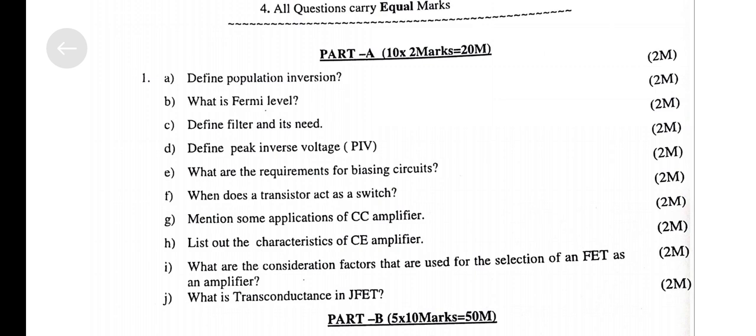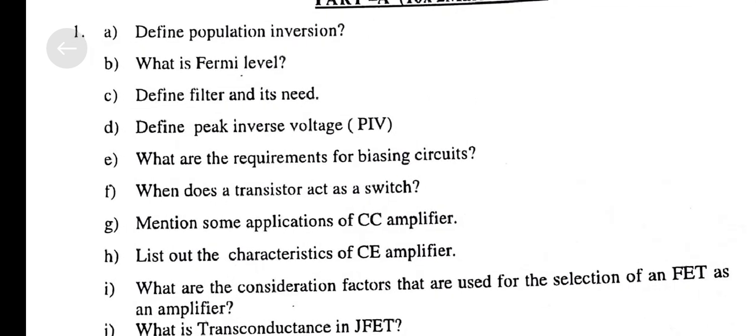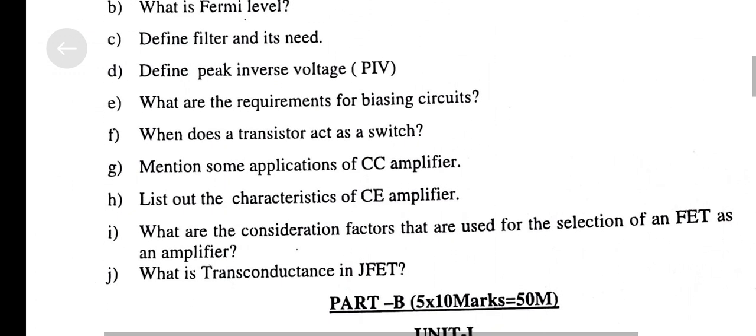Part A. A. What is the Fermi Level? C. Define Filter and its Need. D. Define Peak Inverse Voltage. E. What are the Requirements for Biasing Circuits?